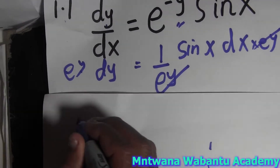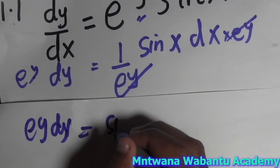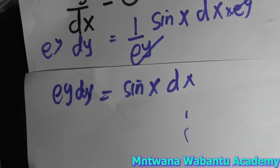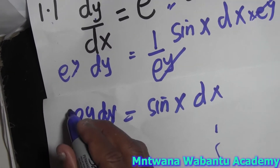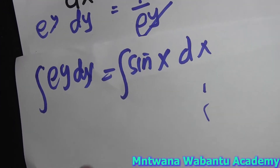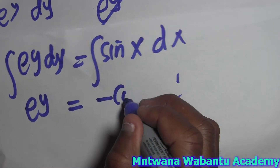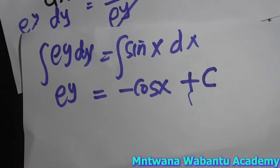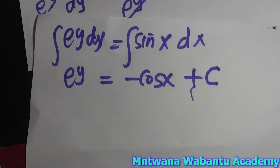So since we have already separated, we have e^y dy on this side and sine(x) dx on the other side. Now we're going to integrate throughout - excuse me, integrate, not differentiate. We integrate on both sides. When you integrate e^y you get e^y, and when you integrate sine(x) you get negative cos(x), plus a constant, because this is an indefinite integral.